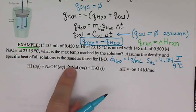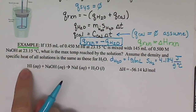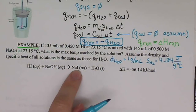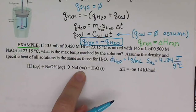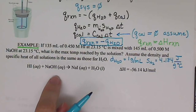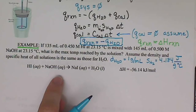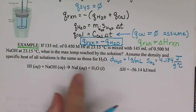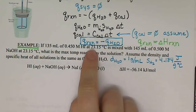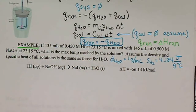When we mix our two solutions, they react producing water and aqueous sodium iodide. This combination is going to release heat. The surrounding water will absorb that heat, raising its temperature. We know we start at 23.15 degrees Celsius, but we don't know the final temperature — that's what we're trying to figure out. First, we have to figure out how much energy our reaction is going to produce.